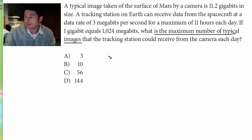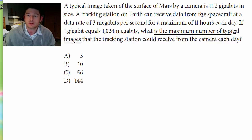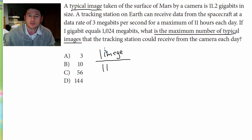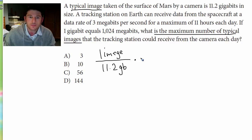Alright, so maybe we figure out how big an image is — how many megabits is an image? They tell us a typical image, so one image is 11.2 gigabits. Just abbreviate that. And then it says 1 gigabit is equal to 1024 megabits.